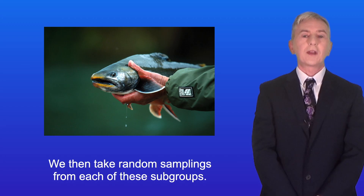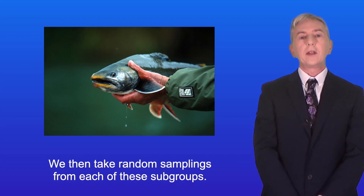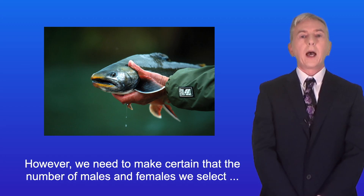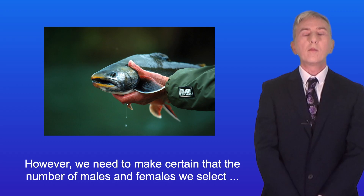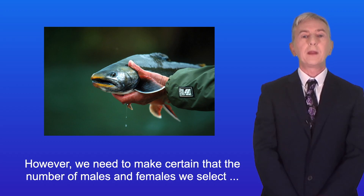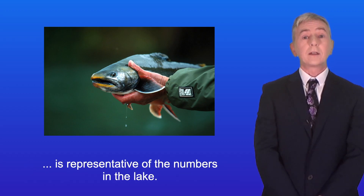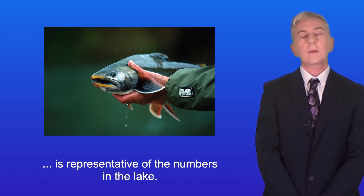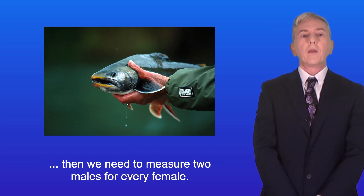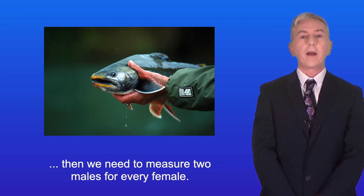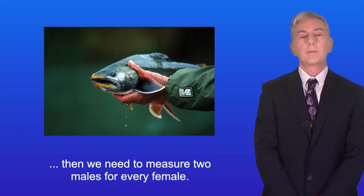We then take random samples from each of these subgroups. However, we need to make certain that the number of males and females we select is representative of the numbers in the lake. If there are twice as many males as females, then we need to measure two males for every female.